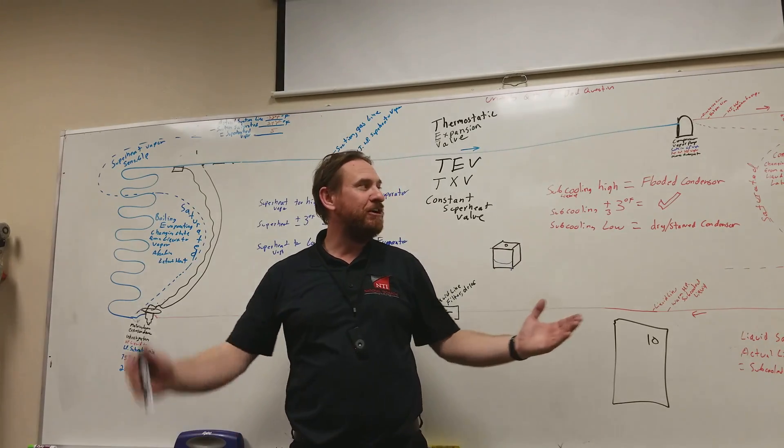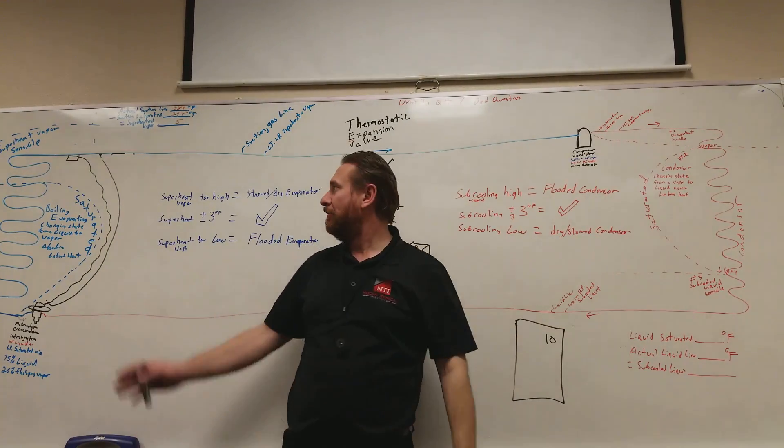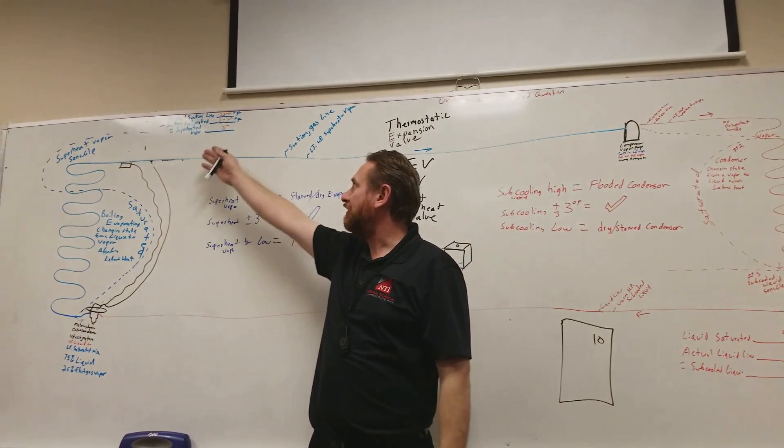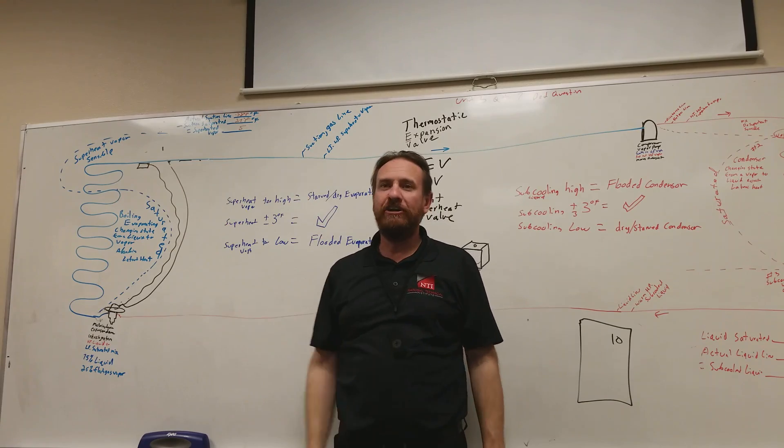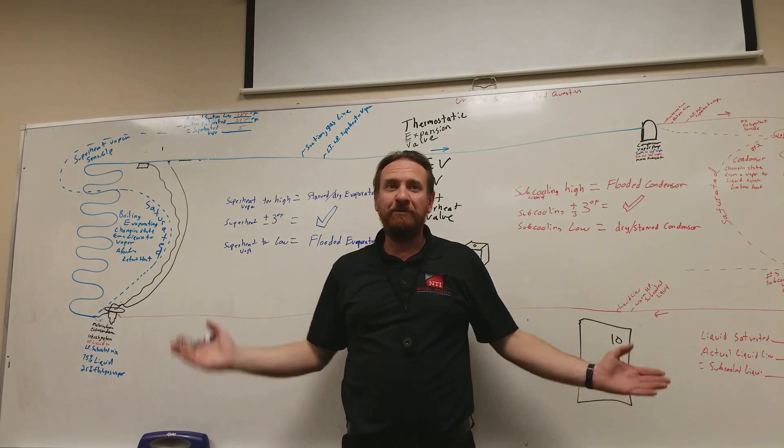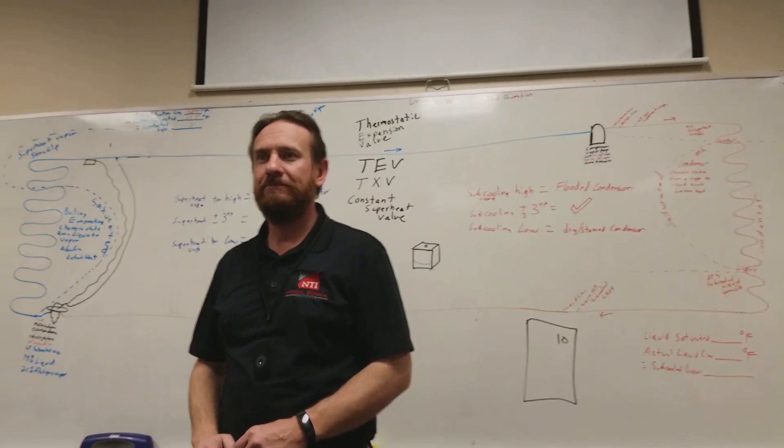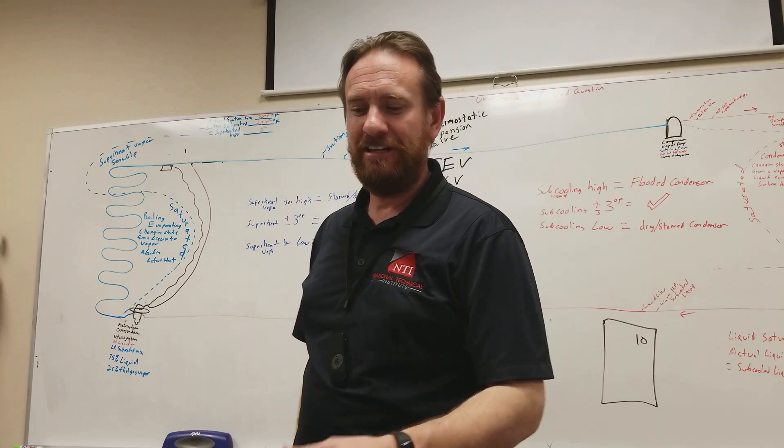And then we'll decide what's going on with the system. We'll look at our superheat and we'll see if it's flooded, good, or starved. We'll look at our suction line or superheat and see if it's good, bad, different, flooded, starved, or good. And then we'll decide if we need to add refrigerant, remove refrigerant, or if there's some other problem. All right. So let's go to the lab.